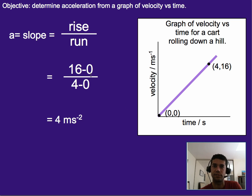In this case, that gives us 16 over four, or four meters per second squared. That would be the acceleration of this cart, and we figured that out from the slope of the graph.